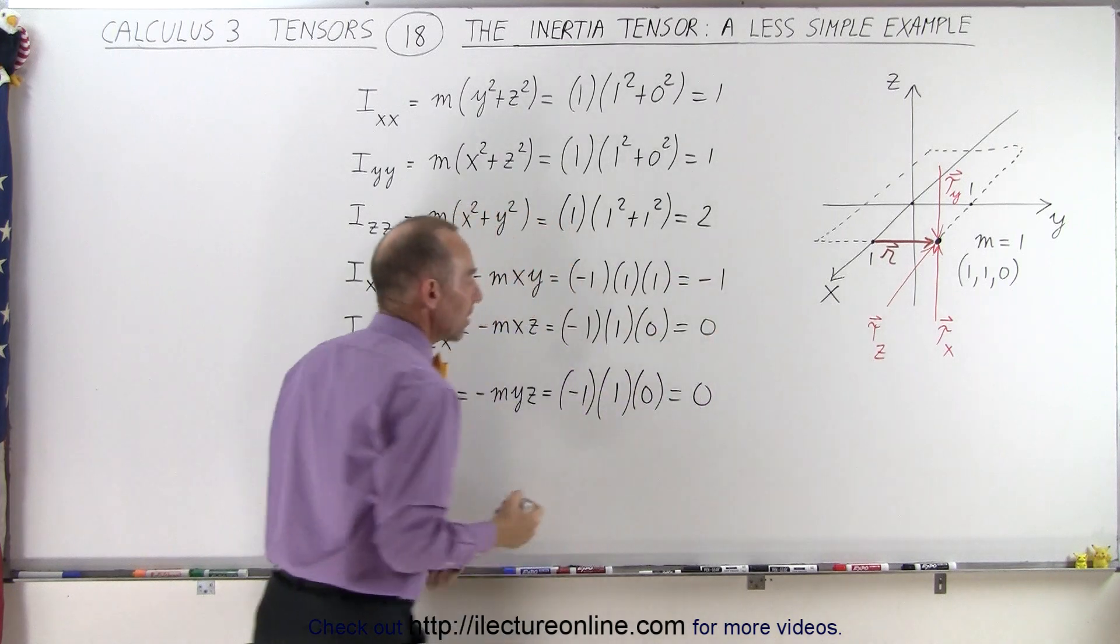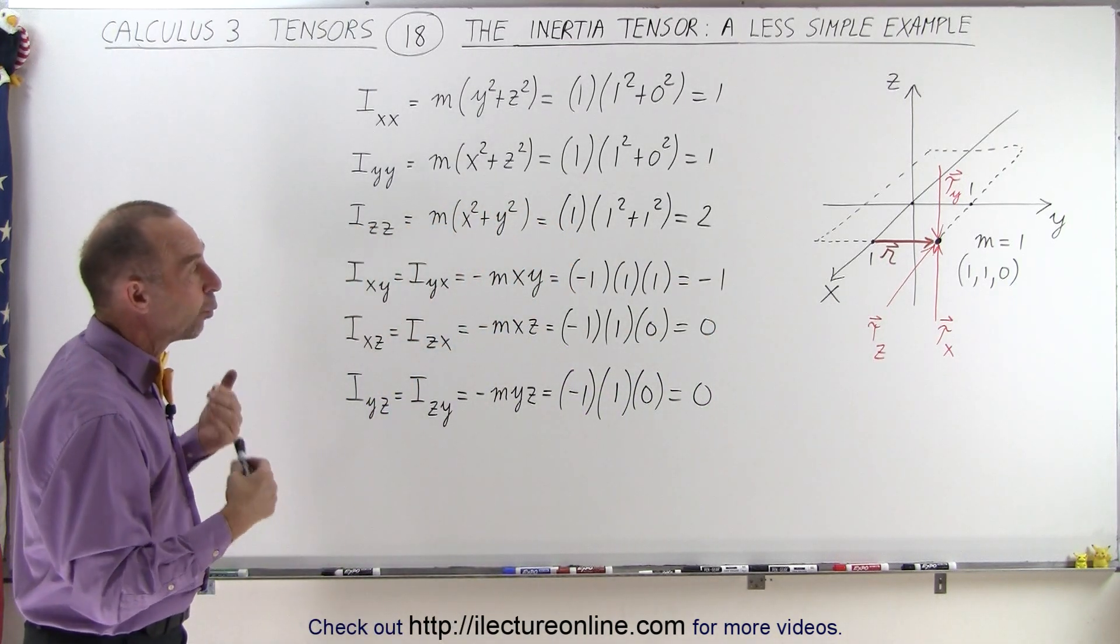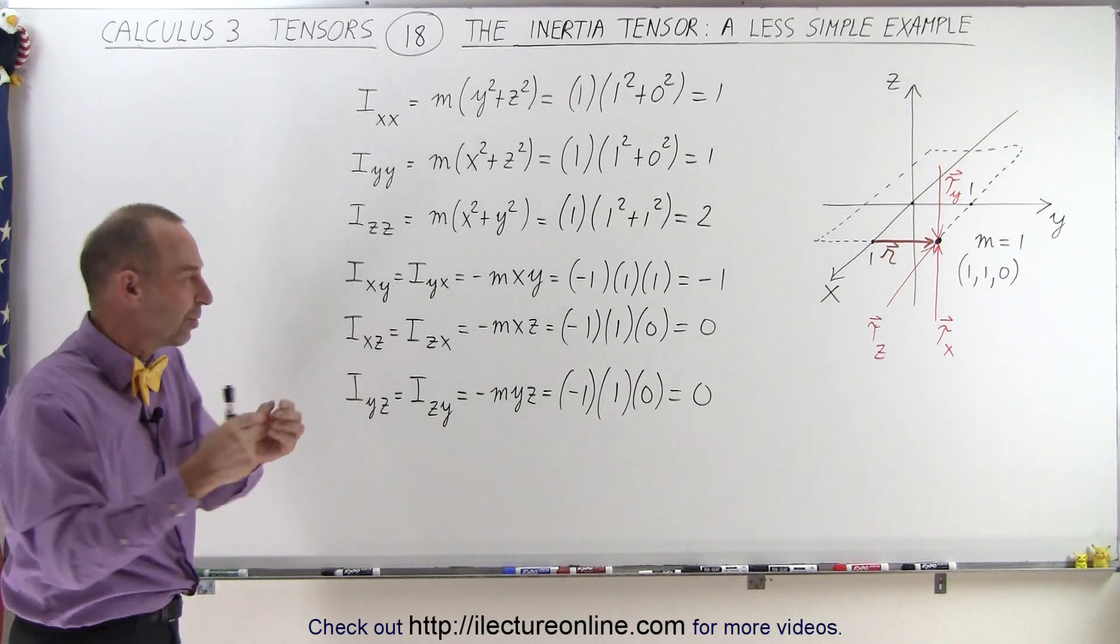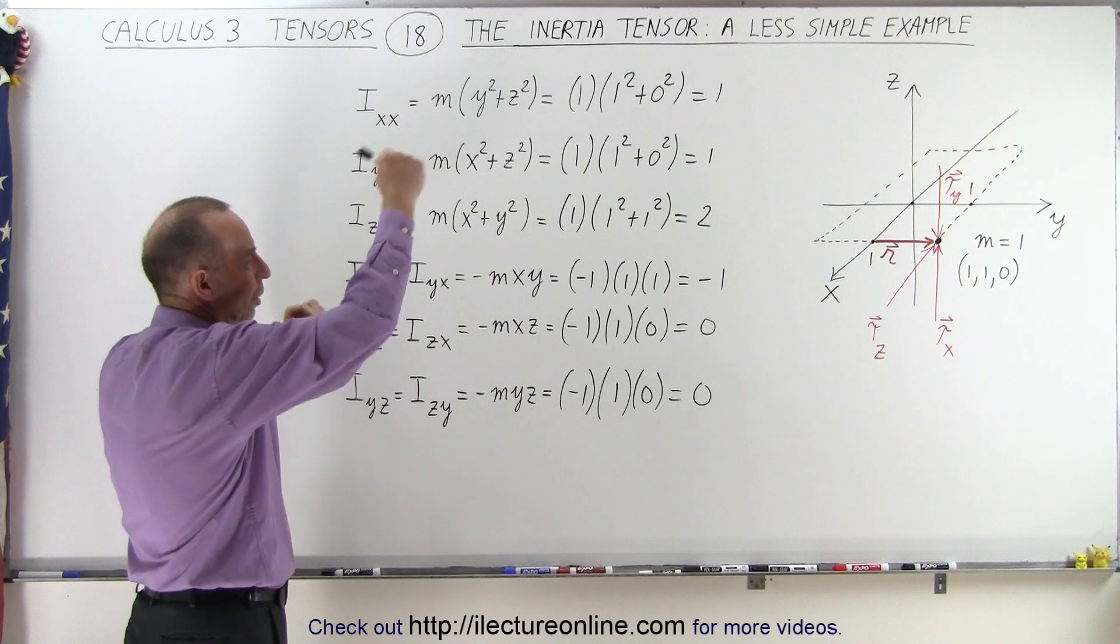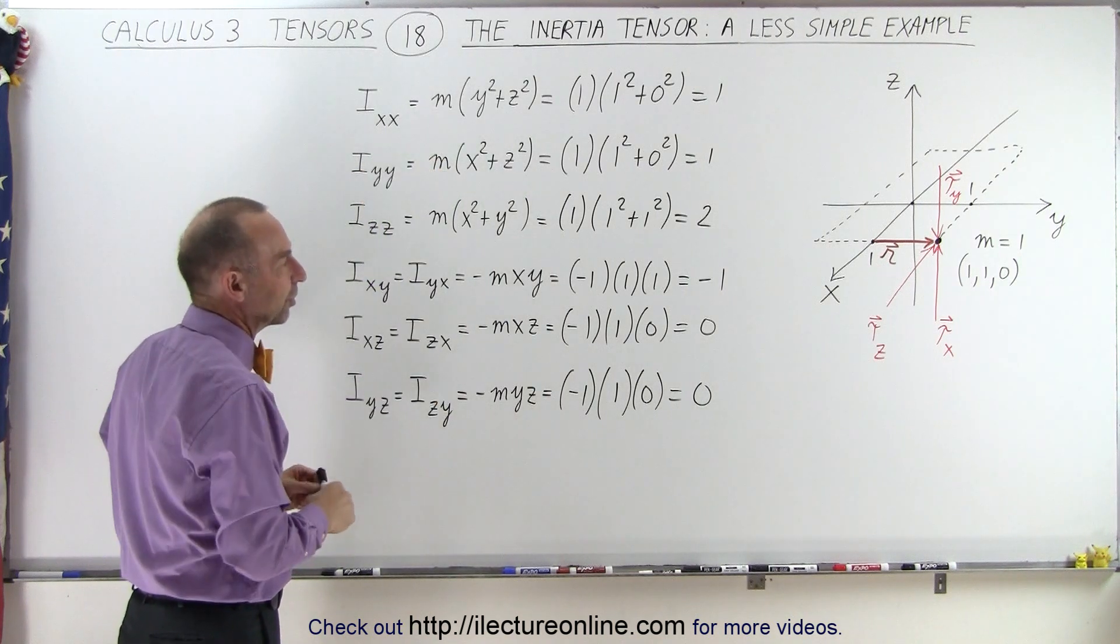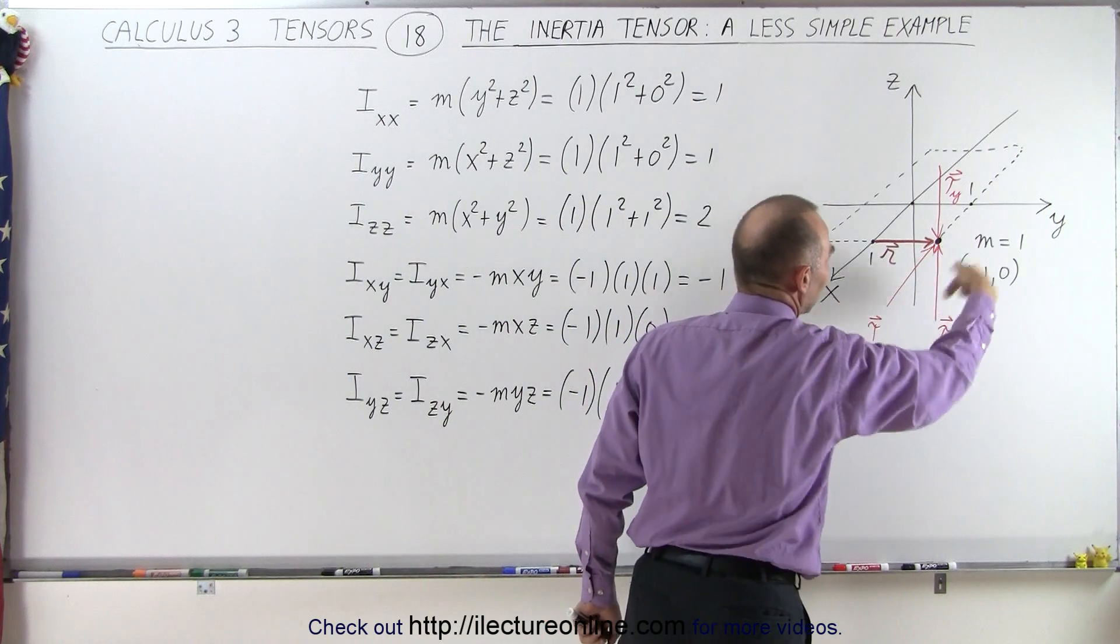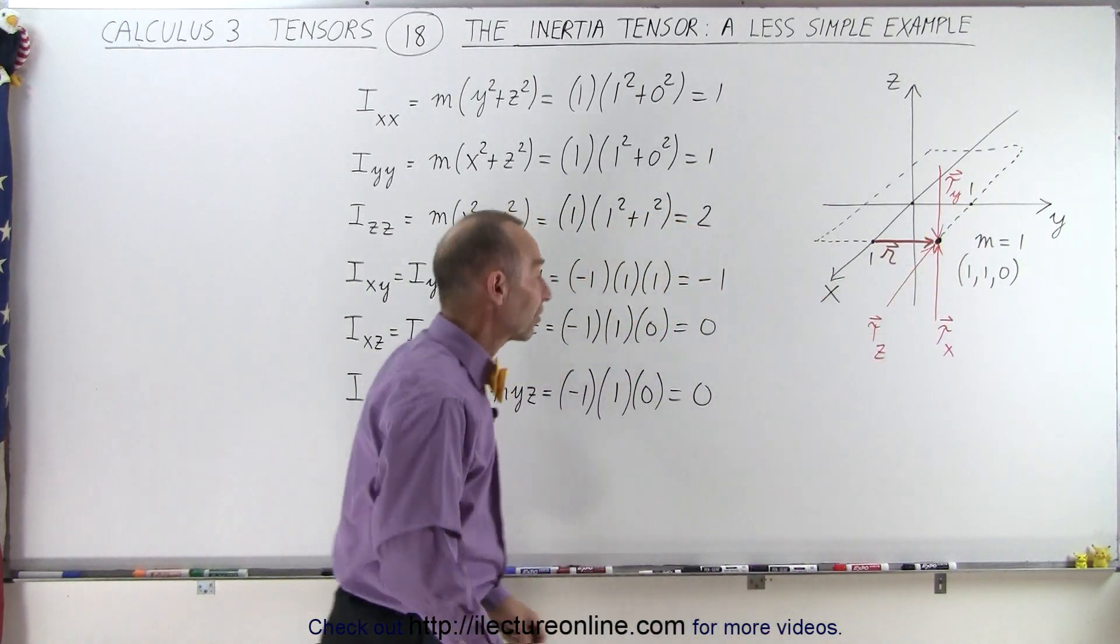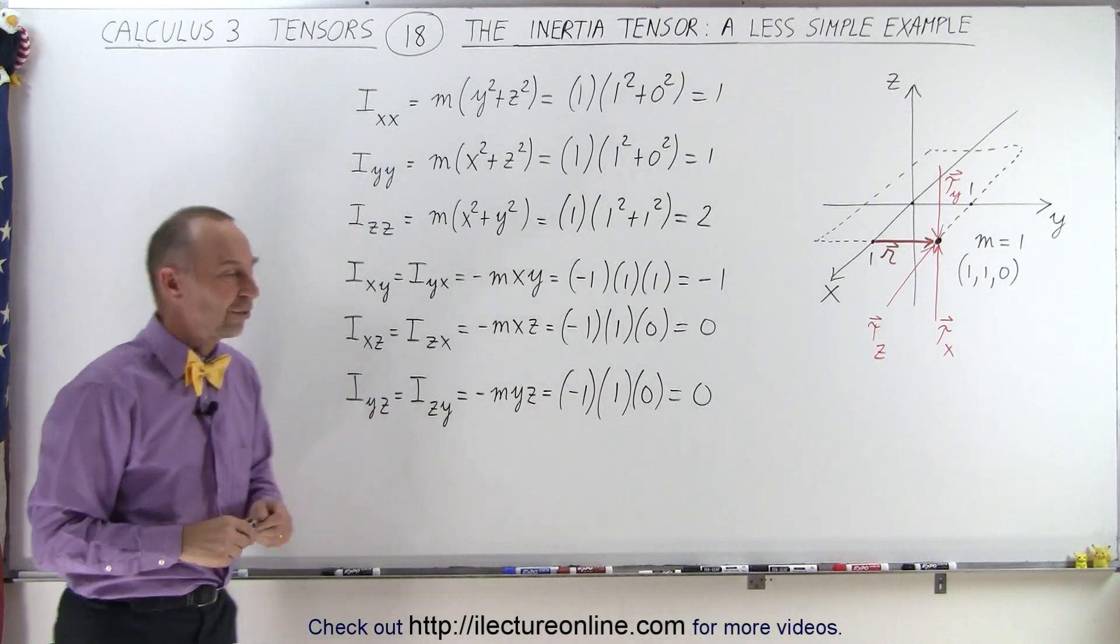So only this term right here had a non-zero value. That means we have one, well, actually since it's a symmetry, we know that Ixy equals Iyx. So we have two off-diagonal terms that are not equal to 0, which means you provide a torque in the x-direction, it will have an effect on the acceleration around the y-direction because there is an element in the inertia tensor.